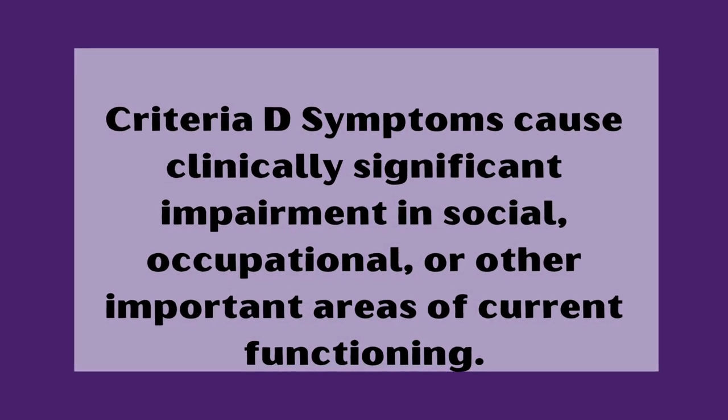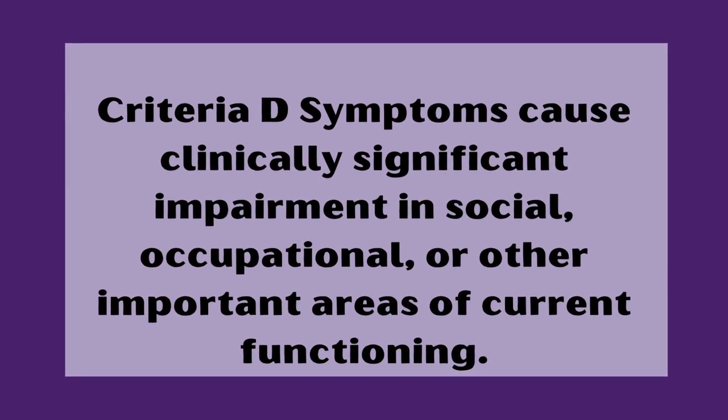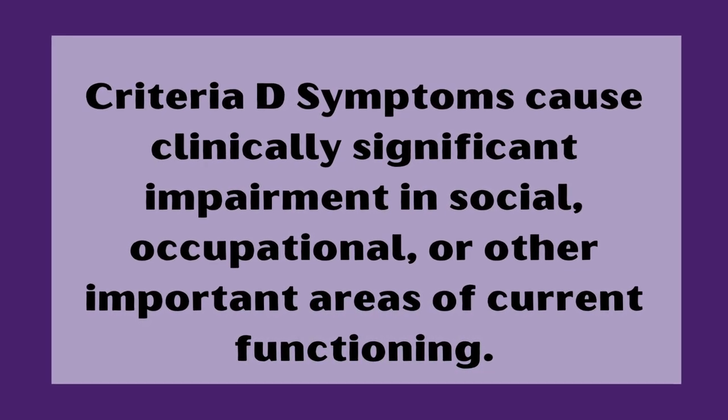Criteria D: symptoms cause clinically significant impairment in social, occupational or other important areas of current functioning. This is open to interpretation, and it also puts the onus — particularly in an adult assessment — on the person feeling comfortable enough to disclose the ways in which they are struggling. Autistic people tend to have an uneven cognitive profile, meaning we might be really good at some things and really struggle with others, and assumptions about all functioning areas might be based on expecting a more consistent cognitive profile.